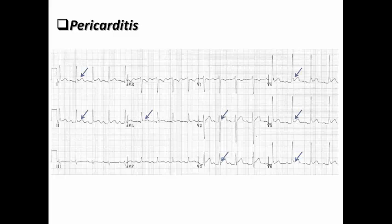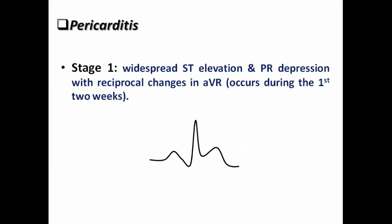In this ECG as well, we can see diffuse ST elevation. Most ECGs will show that leads 1, 2, AVL, and the precordial leads are involved. We can also see ST depression in AVR, though not involving V1 in this example. This ECG is also very suggestive of acute pericarditis.